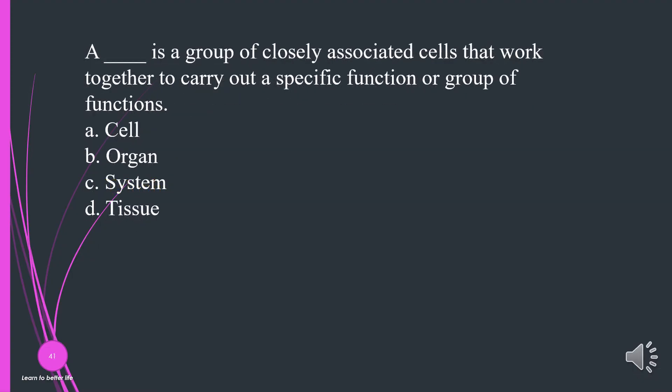What is a group of closely associated cells that work together to carry out a specific function or group of functions? A. Cell. B. Organ. C. System. D. Tissue. The answer is D, tissue.